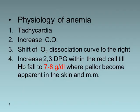The physiology of anemia involves tachycardia, increased cardiac output, and a rightward shift of the oxygen dissociation curve, as well as increased 2,3-diphosphoglycerate within the red cell. Pallor becomes apparent in the skin and mucous membranes once hemoglobin falls to a level of 7 to 8 grams per deciliter.